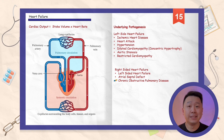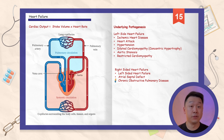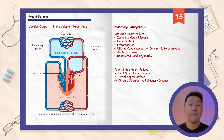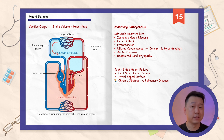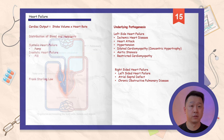In COPD patients, the inability of gas exchange and resulting pulmonary vasoconstriction makes it more difficult for the right side of the heart to pump against. By the same compensatory mechanism, the right side of the heart will increase in size to combat the increased resistance.